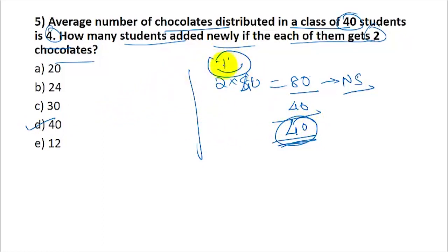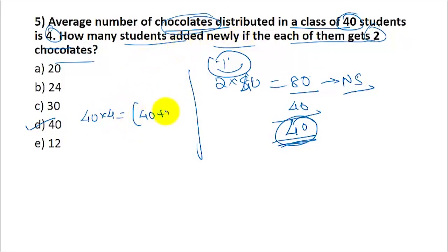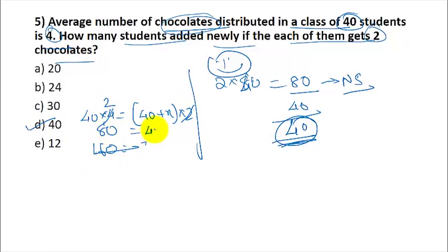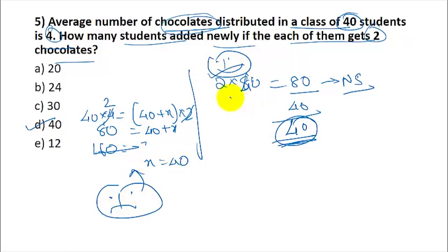Here is the longer method for Question 5: Total chocolates are constant = 40 × 4 = 160. If x students are added, each gets 2 chocolates, so 2 × (40 + x) = 160, which gives 40 + x = 80, so x = 40. You don't want to use this lengthy method — follow the quick approach instead.